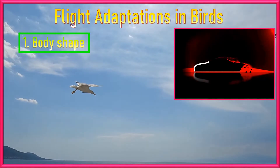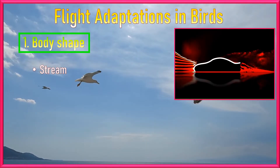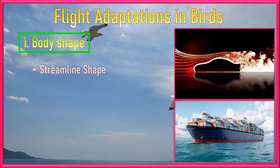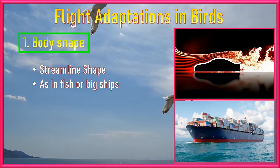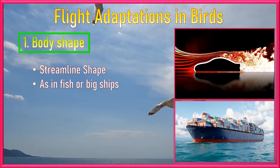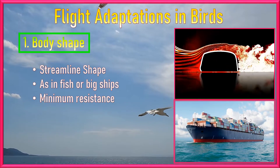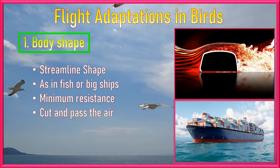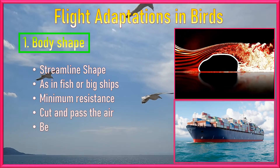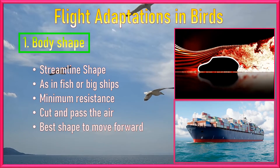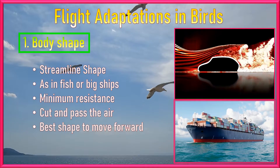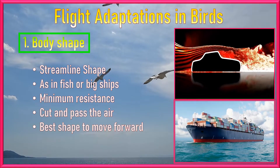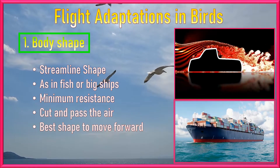Number 1: Body Shape. Birds have adopted a streamlined body shape, as we can see in fishes or big ships to wade through water with minimum resistance. This body shape allows birds to cut and pass the air aside to move forward. This shape is best suited to fly in air than any other shape.